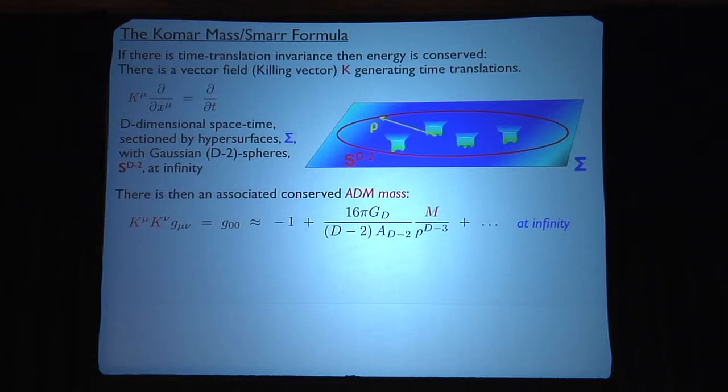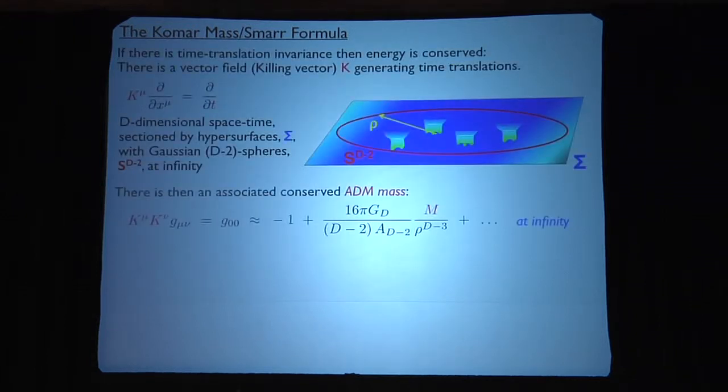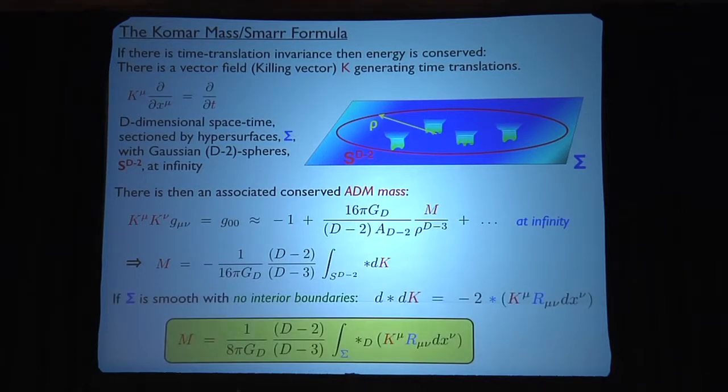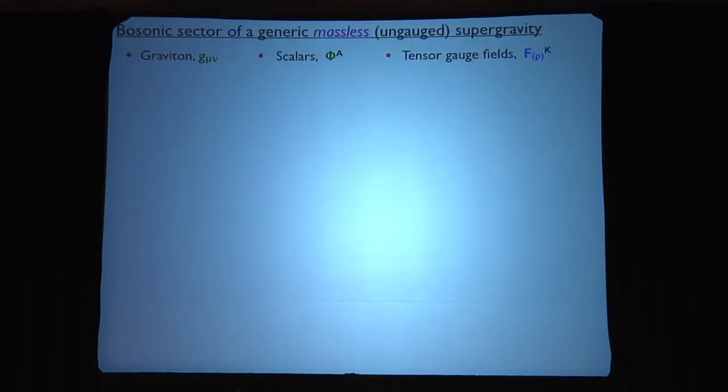Now, you can extract that by a simple surface integral, by simply lowering K, turning it to one form, taking its derivative, and then integrating over the Gaussian surface infinity. And that's the Comar mass formula. Now, what you're going to do is manipulate this a little bit. Since you've got a space-like surface that is smooth, there are no horizons, no singularities, you can basically now turn it into an integral over the surface, and use the fact that the Killing vector is an eigenvector of the Laplacian. And then the game you play is you say, I use Einstein's equations, and I try and simplify as much as I possibly can.